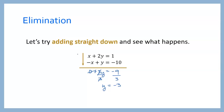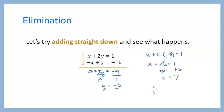Now to get the second variable, we go back and do our substitute step. We take this y value, negative 3, and put it back into one of these original equations — maybe this first one. x plus 2 times negative 3 equals 1. 2 times negative 3 is negative 6. Then we add 6 to both sides to get x by itself — we get x equals 7. So written as an ordered pair, it's 7, negative 3 because we put the x first, then the y.